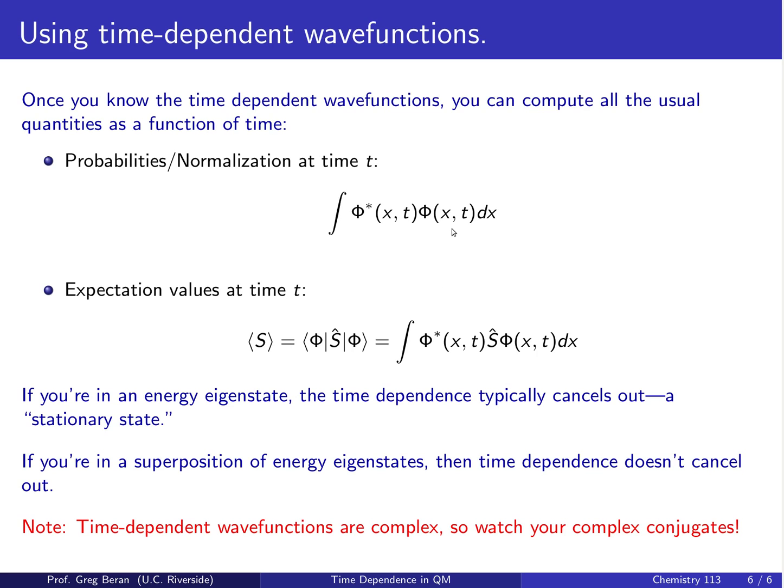That would just be doing the standard ψ* ψ, or in this case, φ* φ dx integrated over whatever the appropriate limits of x are. That will eliminate the variable x, and any dependence on t that remains will tell you how the probability or normalization changes as a function of time.